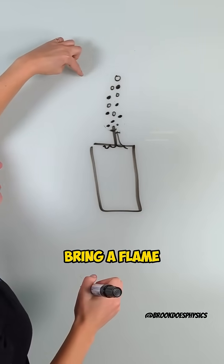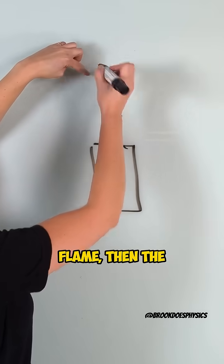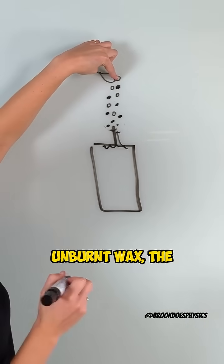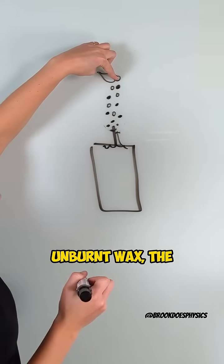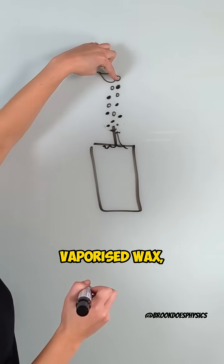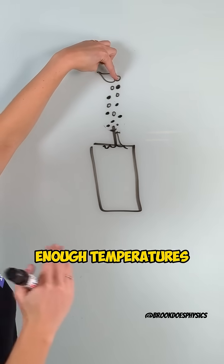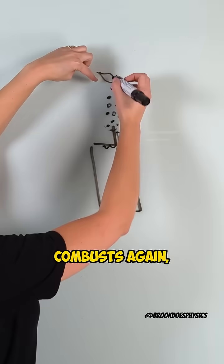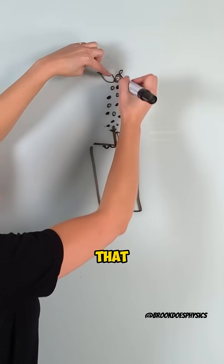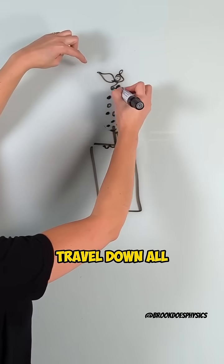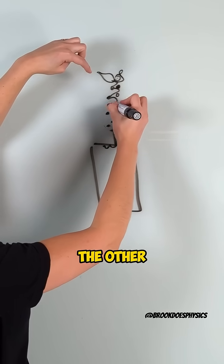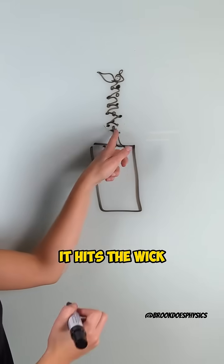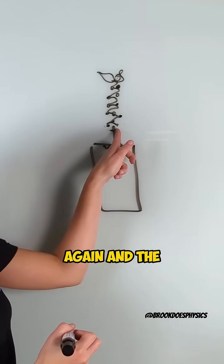So when we bring a flame over, the heat from the flame hits the unburnt vaporized wax, it will cause that wax to reach a high enough temperature to combust again. And when it combusts again, that heat will then travel down all the other unburnt vaporized wax particles until it hits the wick again.